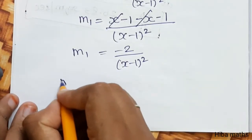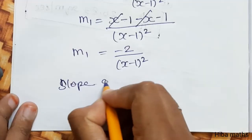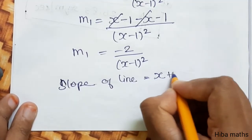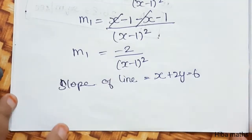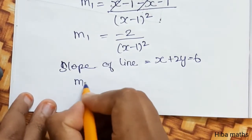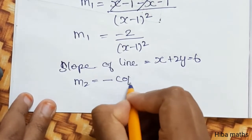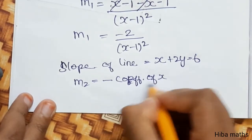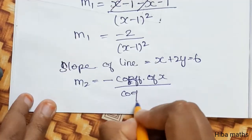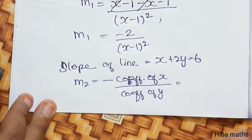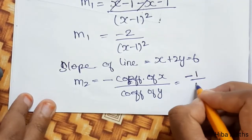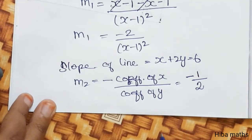Now m2 is the slope of the line. The equation of the line is x plus 2y equal to 6. To find the slope, rearrange for y: 2y equals 6 minus x, so y equals 3 minus x/2. The coefficient of x is −1/2, so m2 equals −1/2. Our condition is that the tangent is parallel to the line.